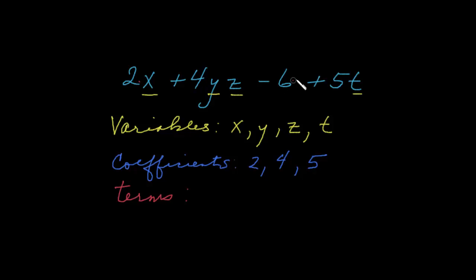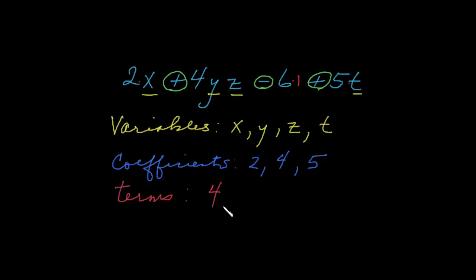Six is being multiplied by one — don't forget there's always a one there — that's a product. And five times t. So in this case we have four terms. Another way of looking at it: we can look at the sums and differences — there's a sum, a difference, and another sum — so the terms are separated by these plus and minus signs. Either way, you'll have four terms. Our constant is the numerical value not sitting in front of a variable — so the negative six is our constant.